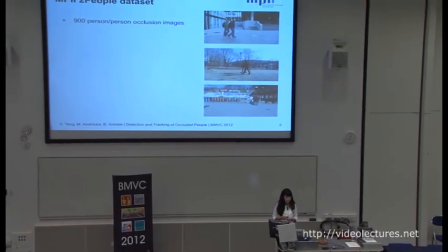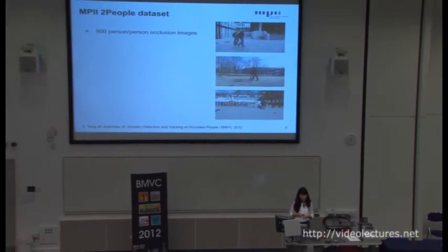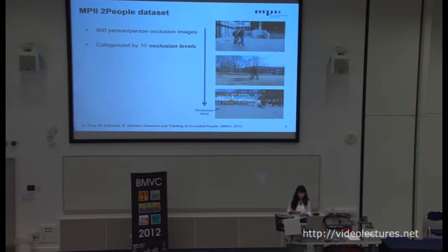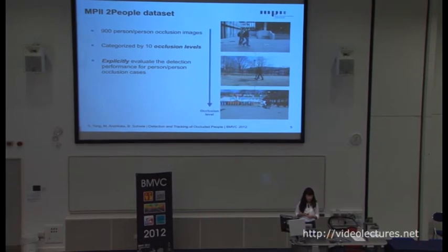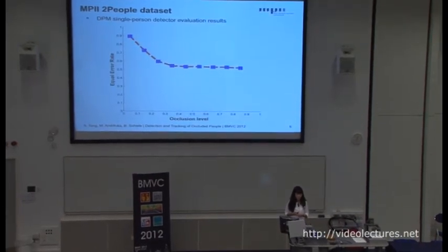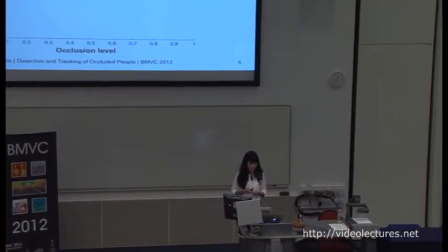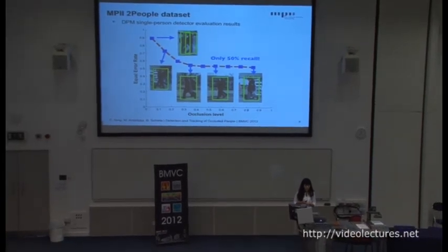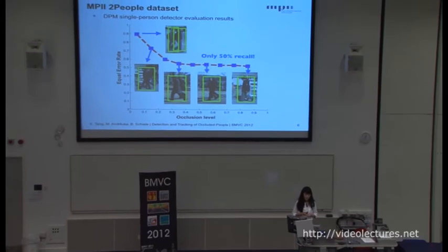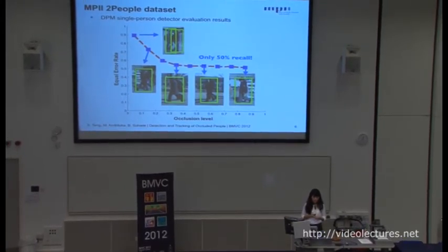In order to do that, we propose the MPII two-people dataset. There are about 900 person-person occlusion images in our dataset, and we categorize all the images by 10 different occlusion levels. With this dataset, we can explicitly evaluate the detection performance for every occlusion level. We show the equal error rate at each occlusion level. When the occlusion level is about 5%, DPM obtains good performance, but as the occlusion level increases, DPM performance drops dramatically. When the occlusion level is about 35% or more, the achieved score is only slightly above 50%, showing that at most cases only one of the two people is detected by DPM.